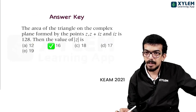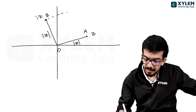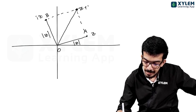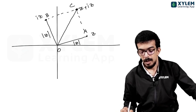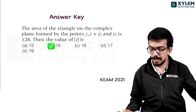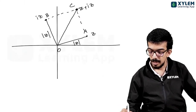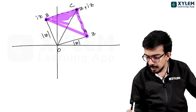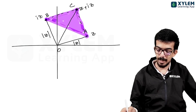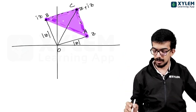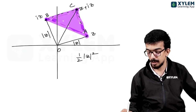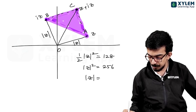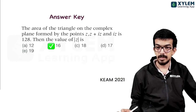Z plus iZ is a complex number; iZ is also a complex number. Using vector addition, the triangle area equals half times modulus of Z squared, and that is equal to 128. So modulus of Z squared equals 256, and modulus of Z equals 16. So 16 is the right answer.